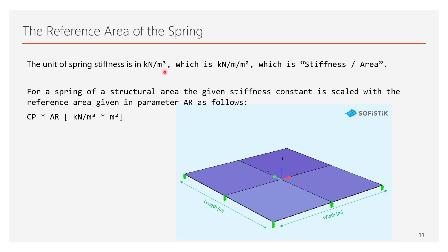For a spring of a structural area, the given stiffness constant is scaled with the reference area given in parameter AR as follows. The given Cp value will be multiplied with AR. Now let's examine the unit. The meter square is meter by meter, one of the m's is the length, and the other m is the width of the area element the spring is assigned to.